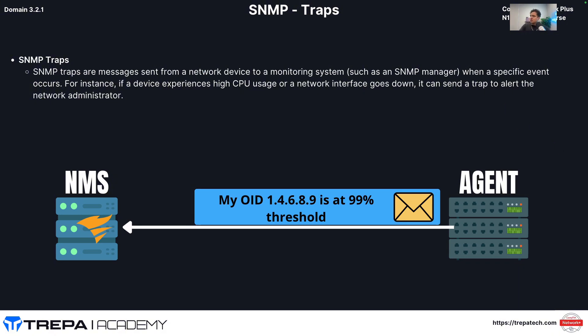SNMP traps are messages sent from a network device to the monitoring system — the SNMP manager — when a specific event occurs, and that's something you configure. If we wanted the agent to alert the NMS right away when CPU reaches 99% threshold, we configure that at the agent. In Cisco, I'd have syslog errors coming to my console line, which would trigger an SNMP trap so that when CPU hits that threshold, the trap is automatically sent to the SNMP manager.